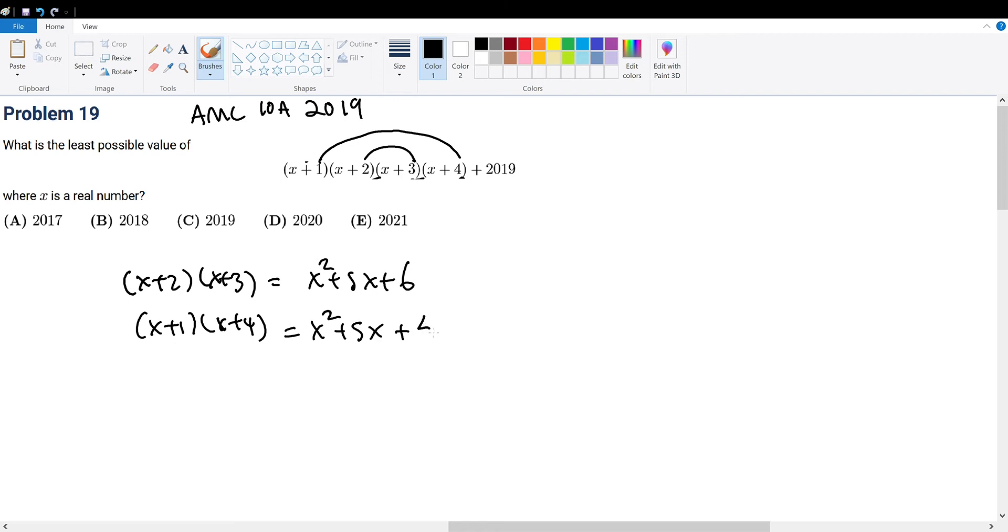which is 1 plus 4, plus 1 times 4, which is 4. So we factor this to be x squared plus 5x plus 6 times x squared plus 5x plus 4 plus 2019 is equal to some term. And we're trying to find the minimum value, and from this term right here, we still cannot deduce a minimum value because we can still factor this even down